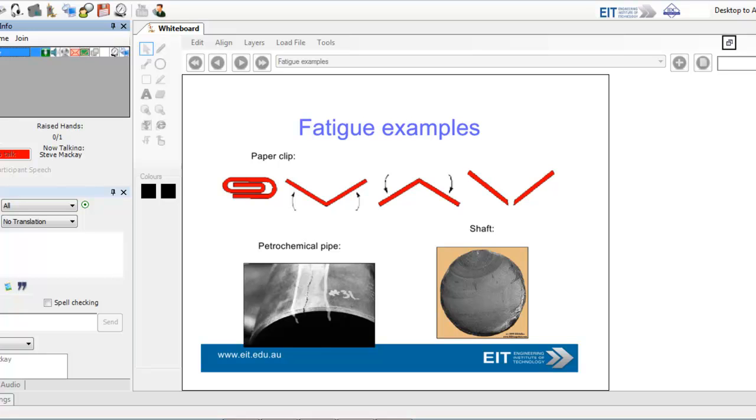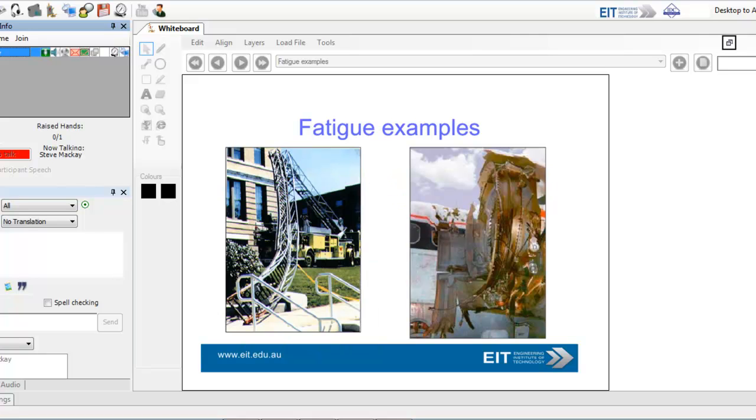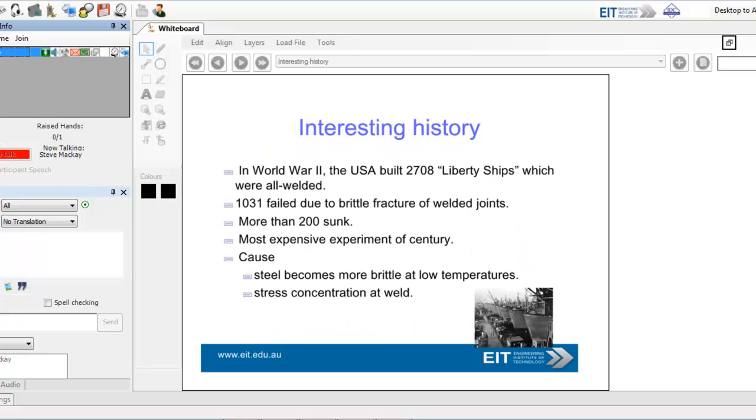Fatigue examples. Here we have a paper clip, as you can see here, going backwards and forth, and eventually it breaks. Here's a fatigue example on a petrochemical pipe. Can't see this one very clearly, but this is obviously a crane. We've had some recent examples of fatigue with cranes on the sea. A turbine engine.